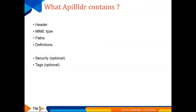API Builder contains several tabs: a header tab where you enter metadata information and MIME types, a paths tab for resource paths and HTTP methods, a definitions tab for request and response parameters — whether simple types like integer and string, object types, or schema references — and security options including basic, app key, API key, and OAuth2. You can also tag the API to expose it to a client.